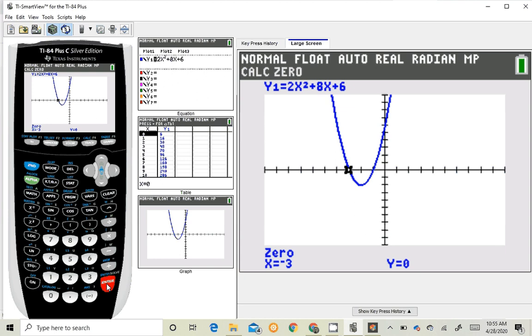And there we go. Our first one is indeed at x equals negative 3. Okay, good. That confirms what we've been seeing on the graph.